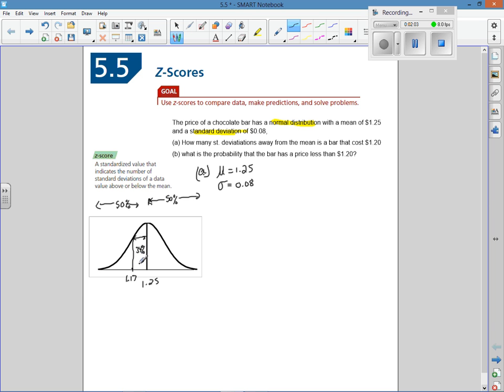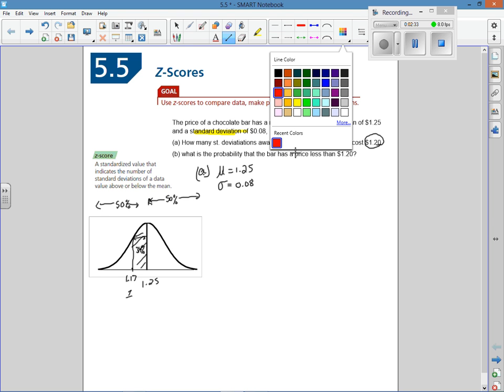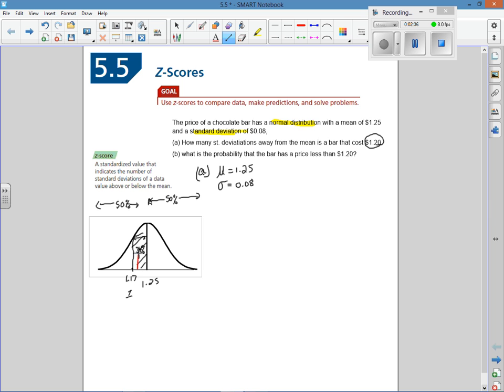Now our question is asking how many standard deviations away is a bar that costs $1.20. We know it's less than one standard deviation. $1.17 would be one standard deviation away, and $1.20 would roughly be here, less than $1.25. What's the probability of landing in this area?